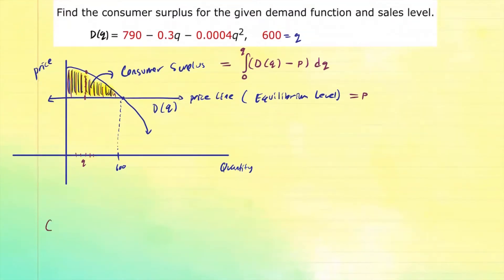So our consumer surplus is going to be the integral from zero to q. In this case, q is 600. So that would be D(q) minus p, the price line dq. So we need to compute the price line.